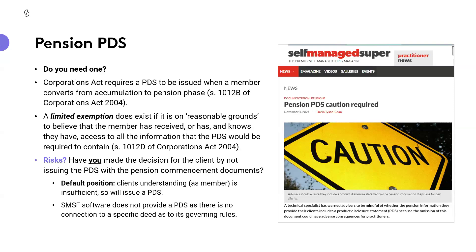The argument is they're a trustee or member of their own SMSF — they kind of should know all the rules. But this comes back to the risks you have made in the decision for the client by not issuing the PDS. By not issuing the PDS, you're assuming the client's understanding is sufficient. The reality, in my view, would be that a client's understanding as a member would be insufficient to know all the terms and conditions and obligations of paying that income stream. So my default view is: issue the PDS.